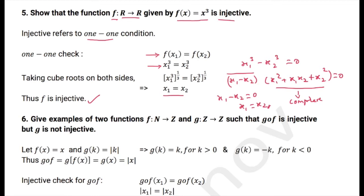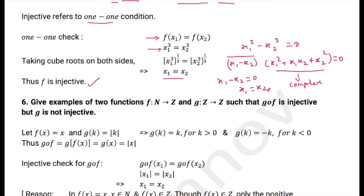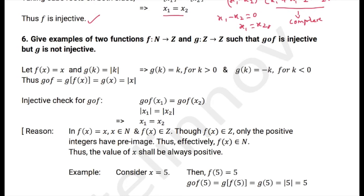The next problem requires finding two functions f and g such that g∘f is injective but g is not injective. Since there is no specific restriction on f, we take the simple function f(x) = x. Since g is not required to be injective and maps integers, we write g(k) = |k|, because the absolute value function is not one-to-one.